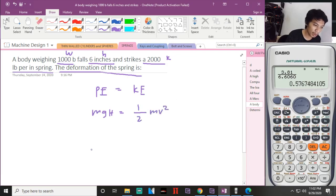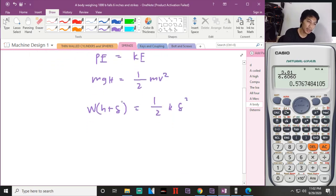But we measure this in terms of weight times the height plus the deflection, equal to one half force times x. But we're talking about Hooke's law, so you need the spring constant k multiplied by the deflection. What is the deflection we're looking for?